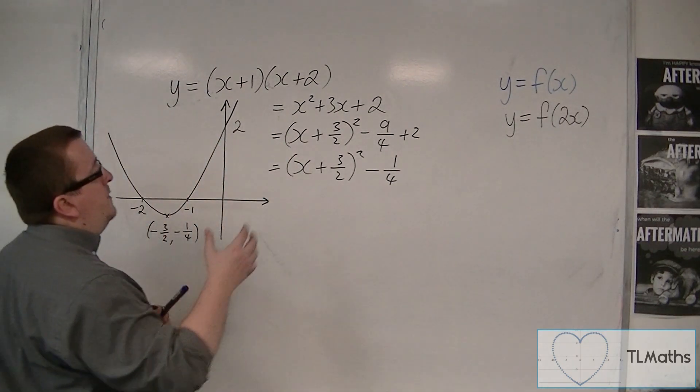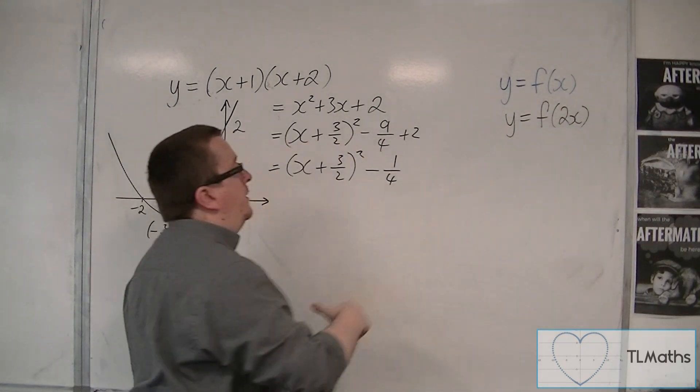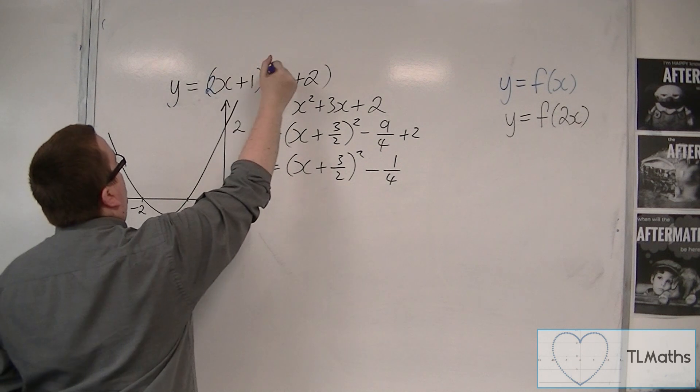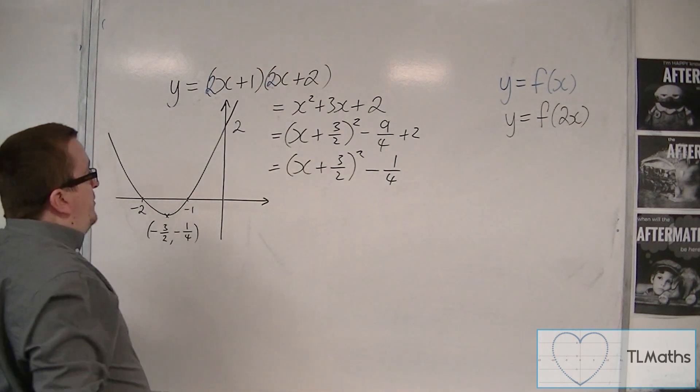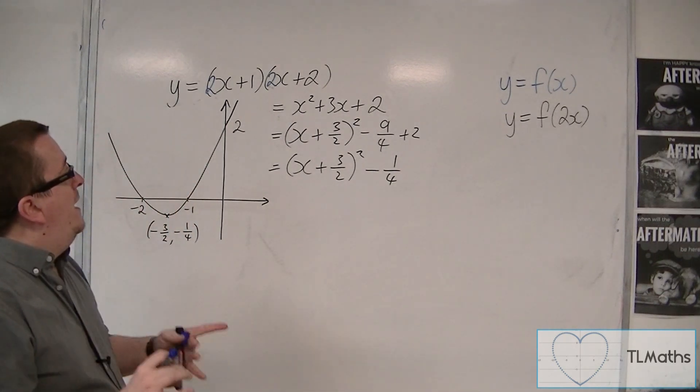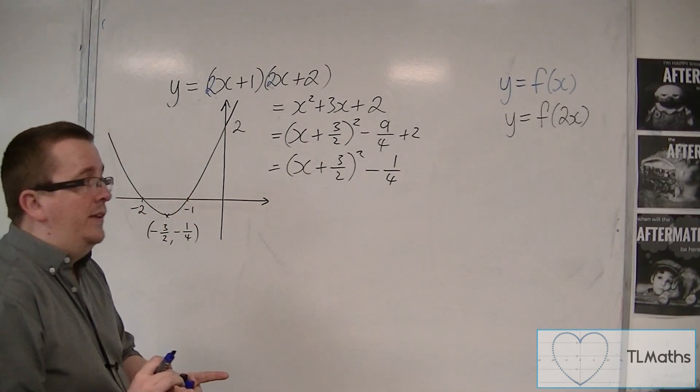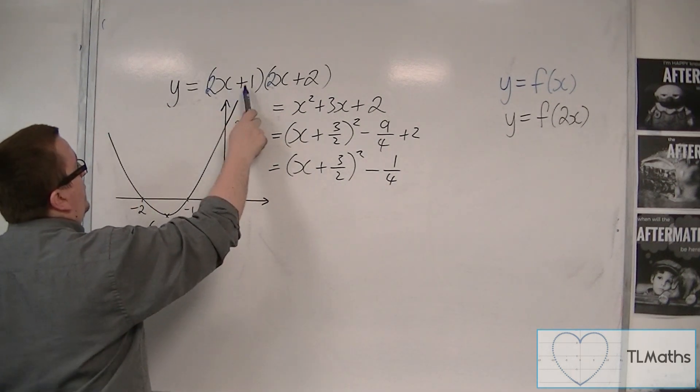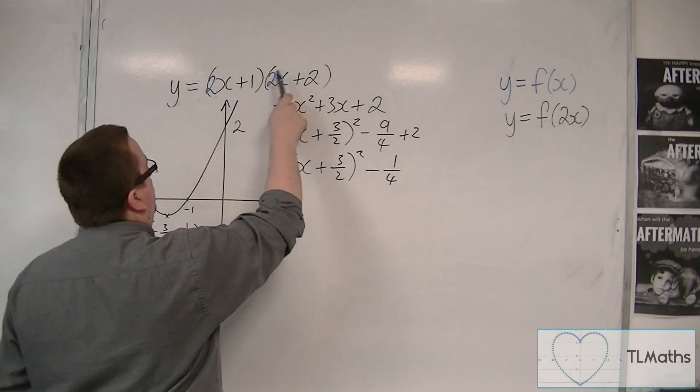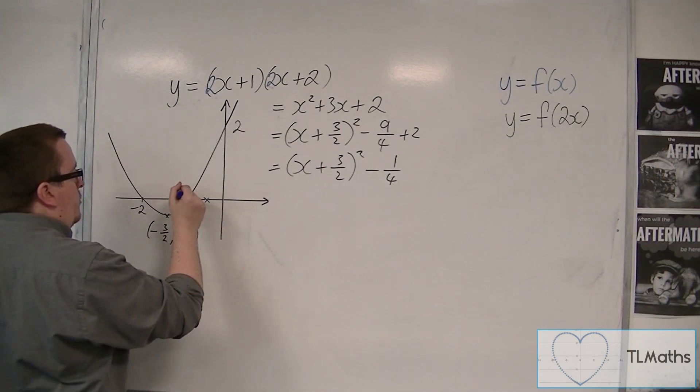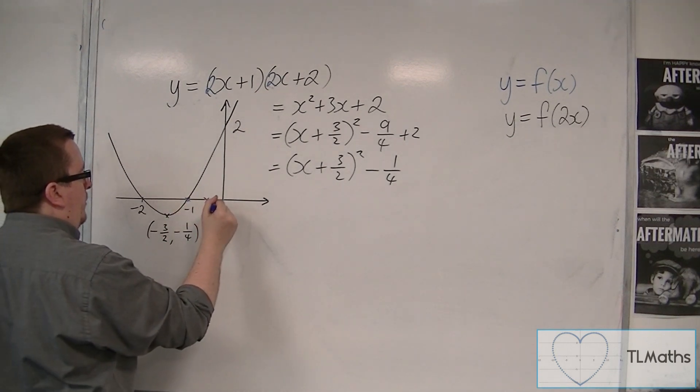So if I were now to replace that x with 2x, I'm replacing each of these x's with 2x. So I'm going to have 2x plus 1 times 2x plus 2. Now clearly, that is going to change where this curve is crossing the x-axis, because now it's going to be crossing at minus 1 half and minus 1. So we've still got that minus 1, but it's now crossing at minus 1 half. So we've now got minus 1 and minus 1 half.